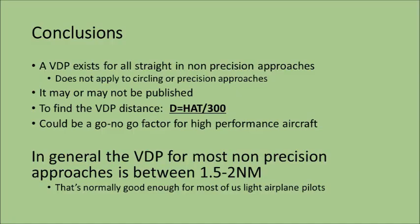In conclusion, the VDP exists for all straight-in non-precision approaches, and as I said, it does not apply to circling or precision approaches. To find the VDP, take the height above touchdown divided by 300 and you get a pretty good number. For some airplanes, this could be a go/no-go factor.